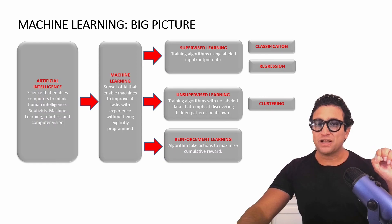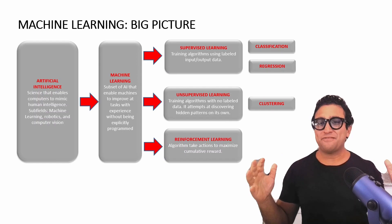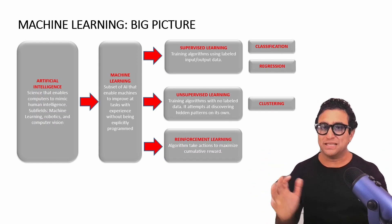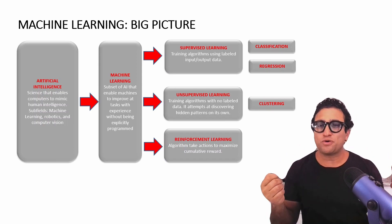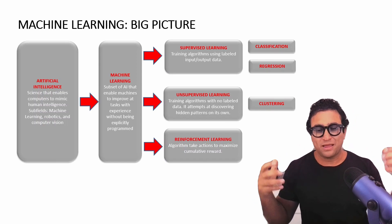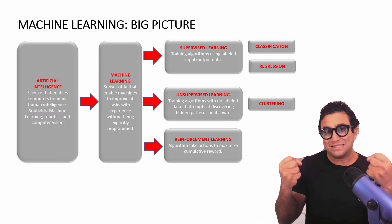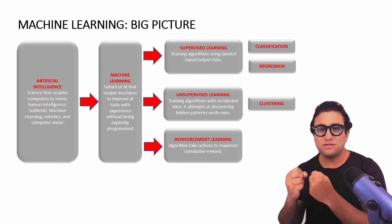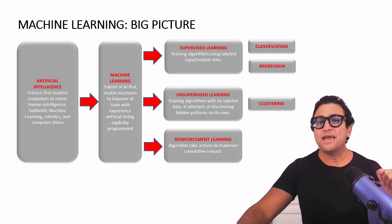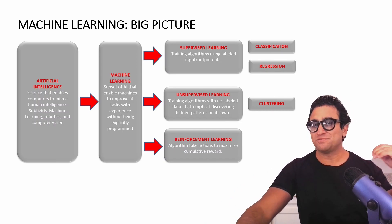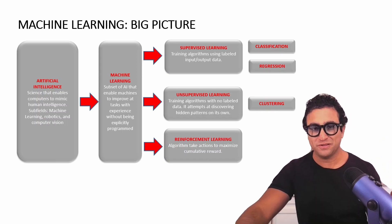Unsupervised learning uses training algorithms that don't have any labels. All I have is a bunch of input data, and the algorithm in an unsupervised fashion — I don't know the correct answer — will start to discover hidden patterns within my data on its own. The major category within unsupervised learning is what we call clustering. I have a couple of slides to cover the differences.